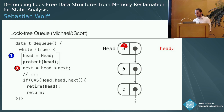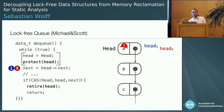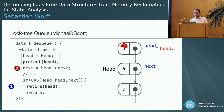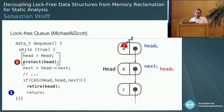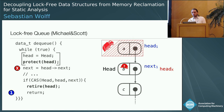Thread 1 again reads out the head pointer, also issues a protection, and then performs its dequeue. In the end, it does not delete the memory but calls retire — telling the SMR algorithm that node A should be deleted. But the SMR algorithm sees that node A is protected, so it defers the deletion. Thread X can now access the node and continue its operation without crashing. If it continues, it will reread the new head pointer and move the protection to node B, which allows the SMR to free node A. So we now have a working lock-free queue with memory reclamation where threads do not crash.